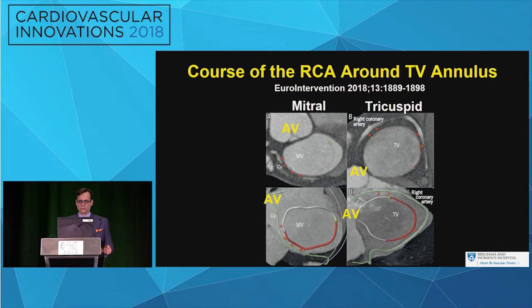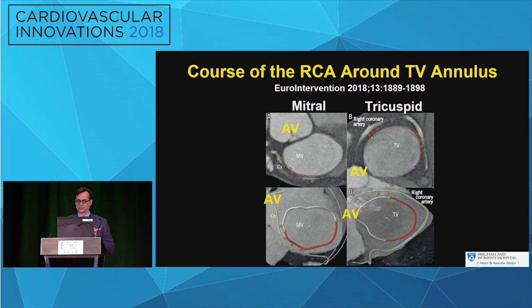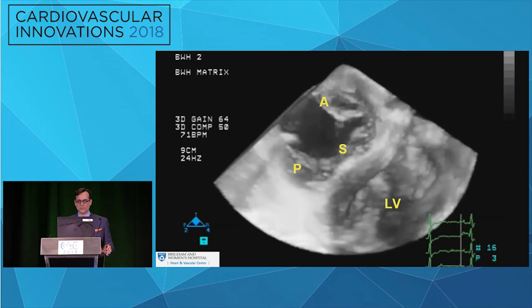A key article showed that on the mitral side, the circumflex artery is close to the mitral annulus typically at the lateral portion. For the tricuspid valve there are two points — one more anterior along the anterior leaflet and another more posterior along the posterior leaflet attachment — where the interaction between the right coronary and the tricuspid annulus tends to be closest. A lot of it has to do with dominance: a dominant right coronary artery typically has closer association with the annulus than a non-dominant one.